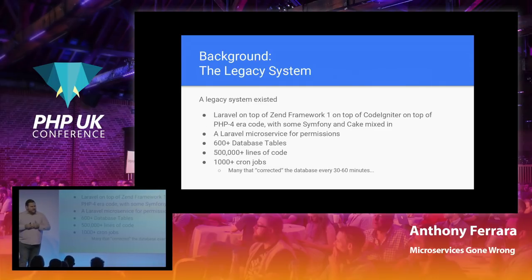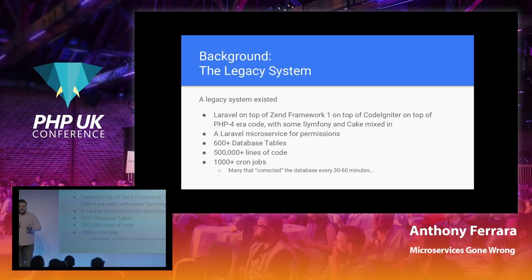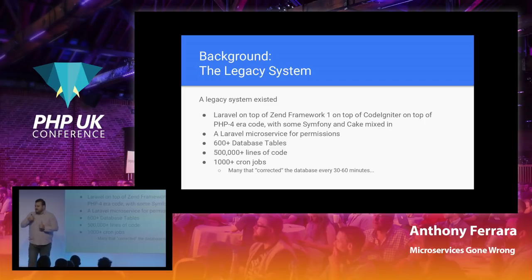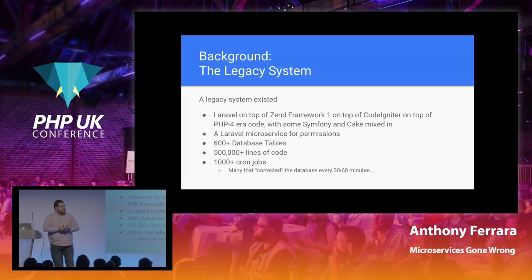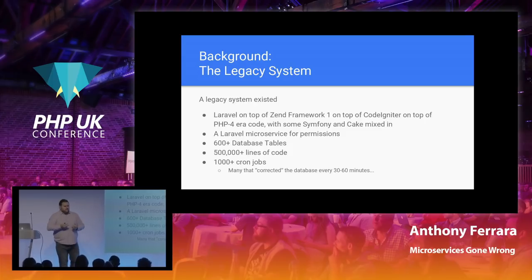The background: the legacy system. We had a monolithic application with bits of Zend Framework 1, CodeIgniter, Symfony, Cake, and a bunch of PHP 4 code in it. And to be fair, it worked pretty well — it powered a multi-million-dollar-a-year business for years. But it was kind of a nightmare to work with. We started doing quite a bit of refactoring; Symfony was being used to try to condense onto one framework, but with about half a million lines of code, that's not an easy thing to do.